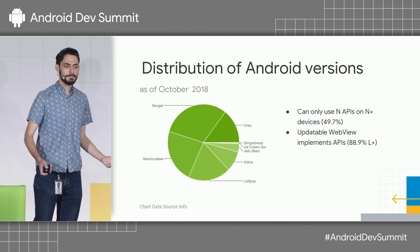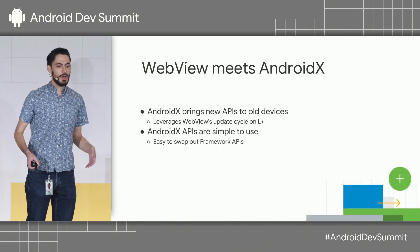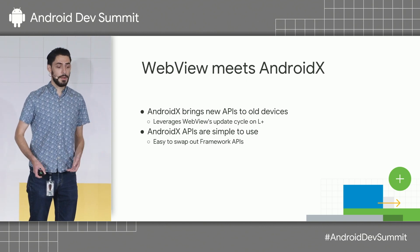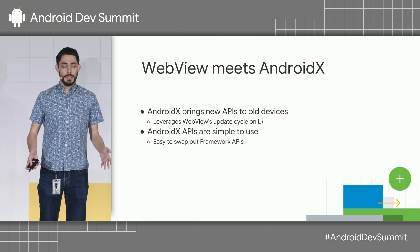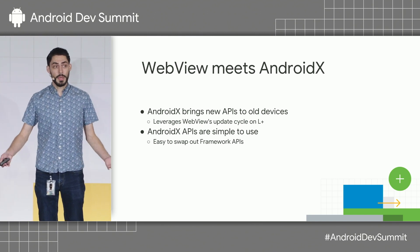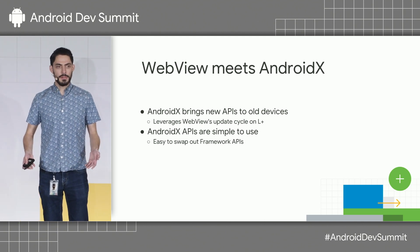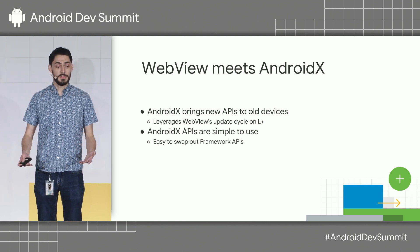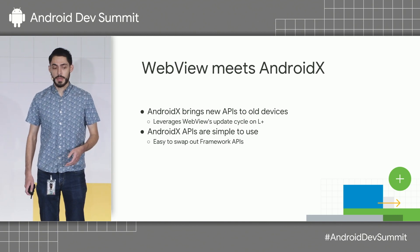So we thought, can we do better? Over the past year, we've worked on our AndroidX library. We launched it and we're pretty excited about it. The basic idea is that we're going to bring all these brand-new developer APIs with the device coverage you need, supporting Lollipop and above by leveraging WebView's update cycle. We also spent a lot of time making sure it's really usable, designed to be fairly straightforward to swap out from the framework's APIs.